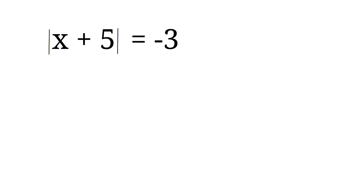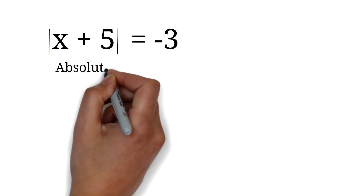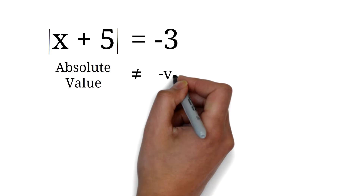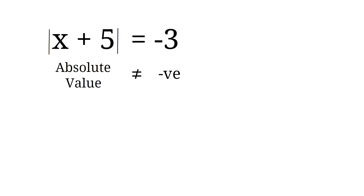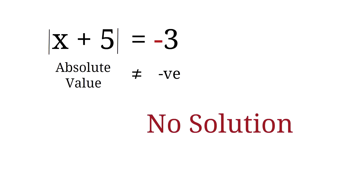The absolute value of x plus 5 is negative 3. Find x. This question is very important. The absolute value cannot be negative, so if you have an absolute value on one side, the other side cannot be negative. We say this has no solution. When the absolute value is on one side and a negative number is on the other side, there is no solution.